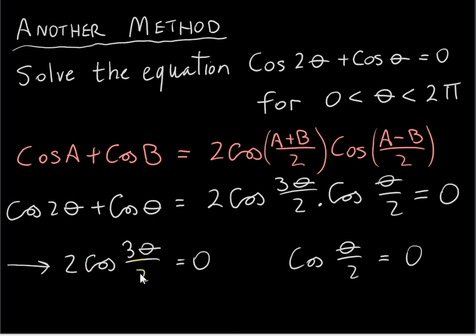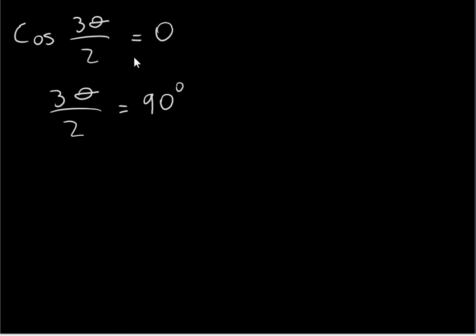Let's look at cos(3θ/2) = 0 first. We can divide across by 2 — if 2 times something is 0, then that something must be 0. If you get the inverse cos of 0 on your calculator, you'll get 90 degrees. But that's not the only solution, so we have to use the CAST rule and see what angles have a cosine of 0.